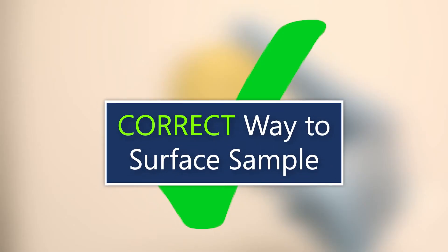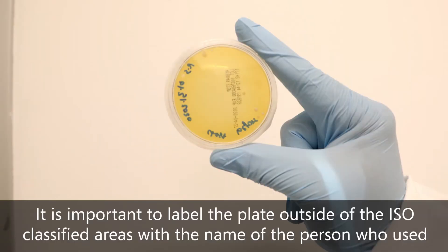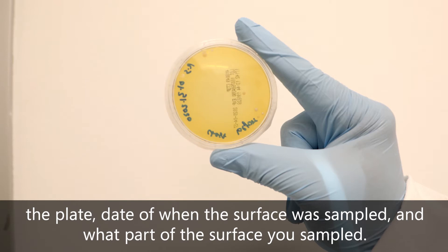Here is an example on how to correctly surface sample. It is important to label the plate outside of the ISO-classified areas with the name of the person who used the plate, date of when the surface was sampled, and what part of the surface you sampled.